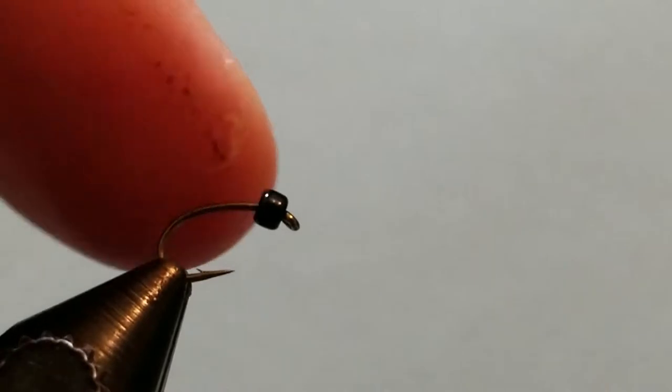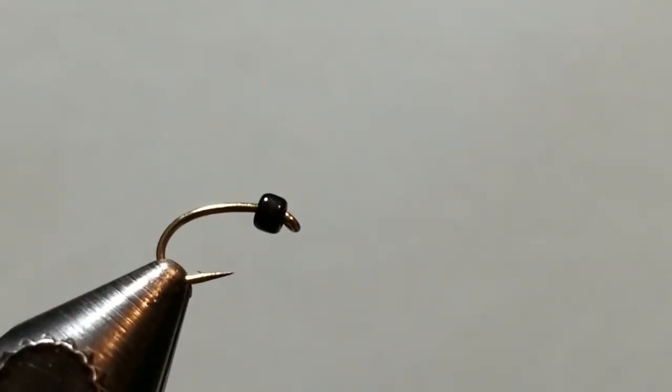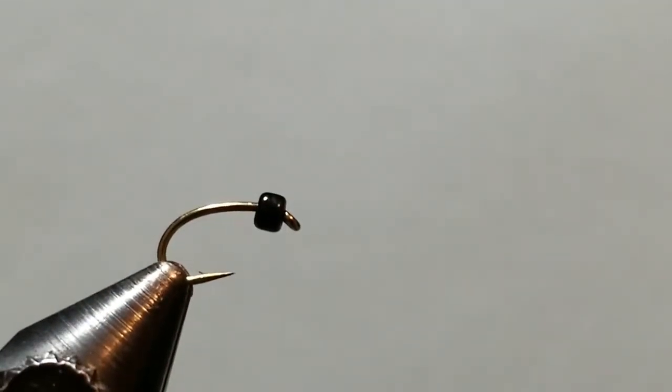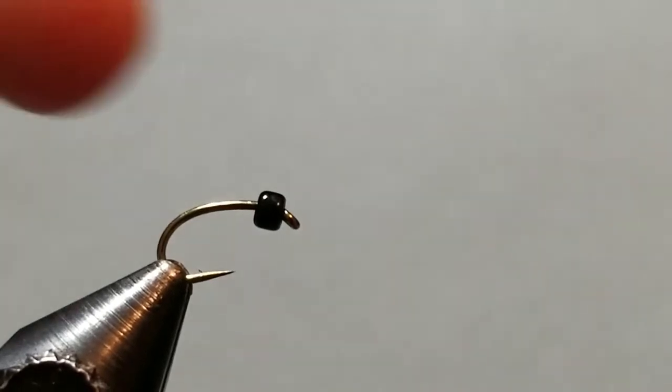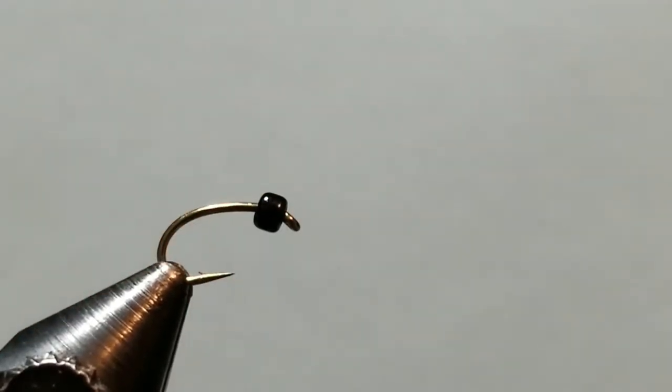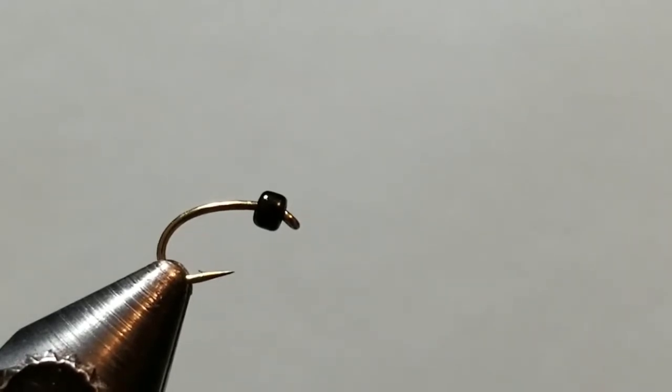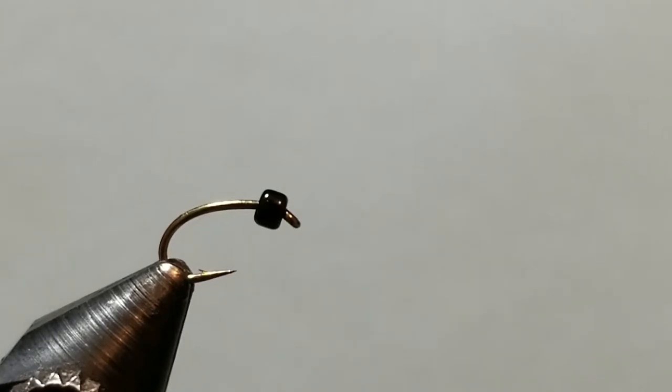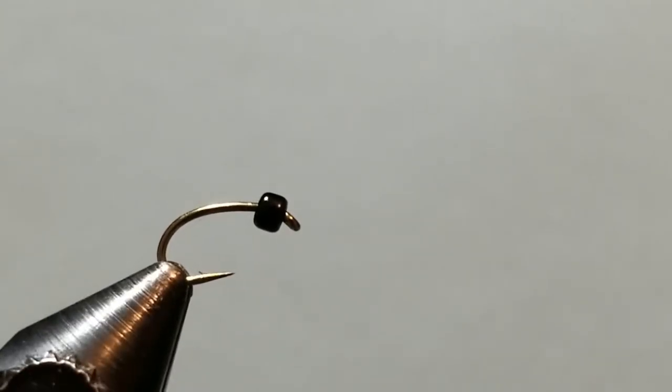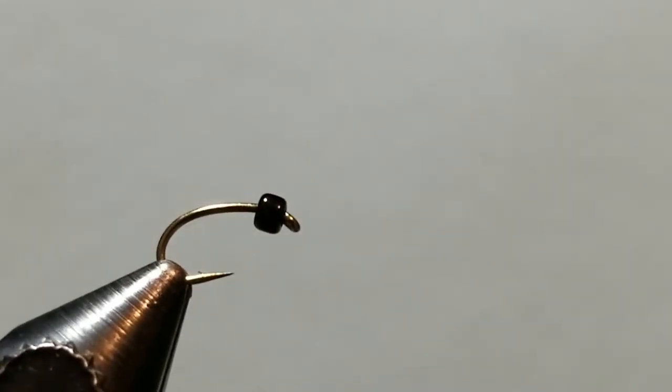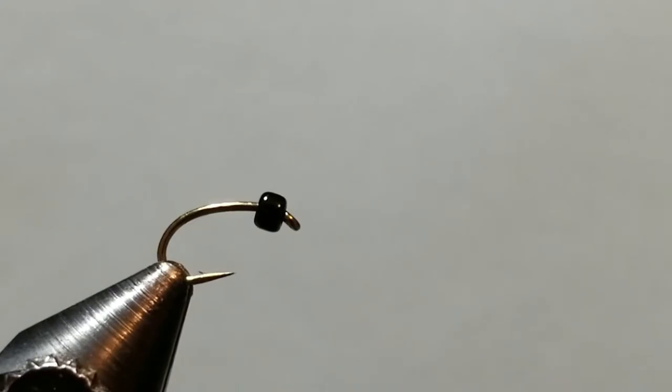It's got a little bitty bead on it. It is a black glass bead. I wish I knew more information about what size it was but I don't because it was purchased at a craft store. This is the same type of bead that you would use on bracelets and necklaces and that kind of thing. You can find it in places like Walmart, Hobby Lobby, stuff like that. I've got it on a Tiemco Caddis and Shrimp hook. That's a size 18. That's what I'm going to start with.